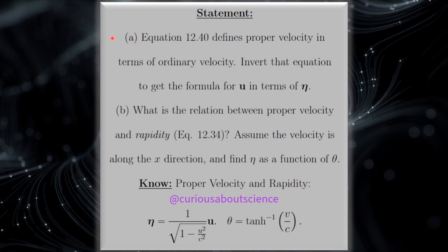Equation 12.40 defines proper velocity in terms of the ordinary velocity. Invert that equation to get the ordinary velocity U in terms of the proper velocity eta.